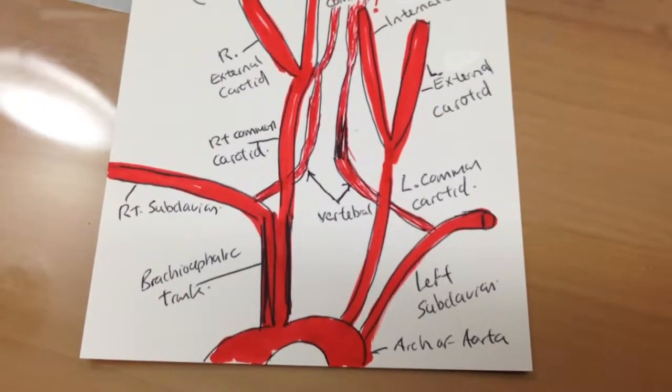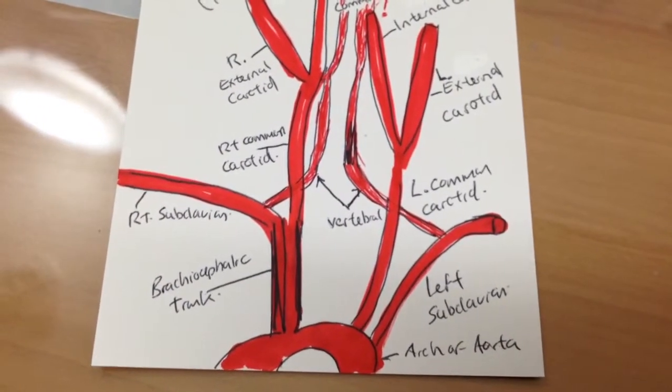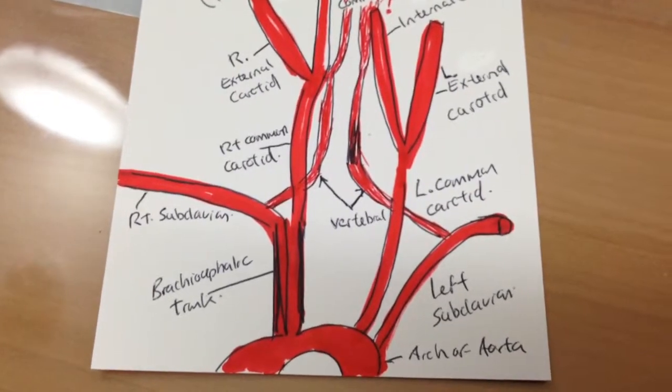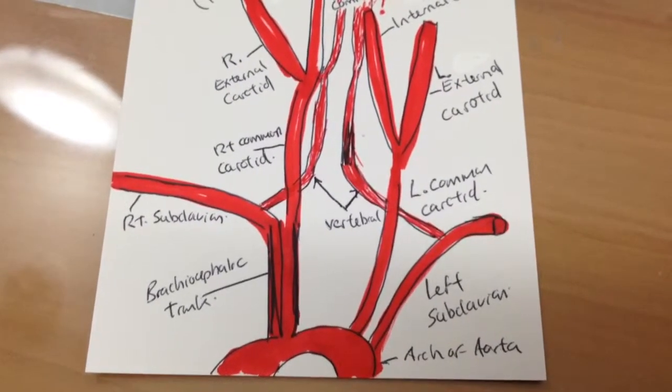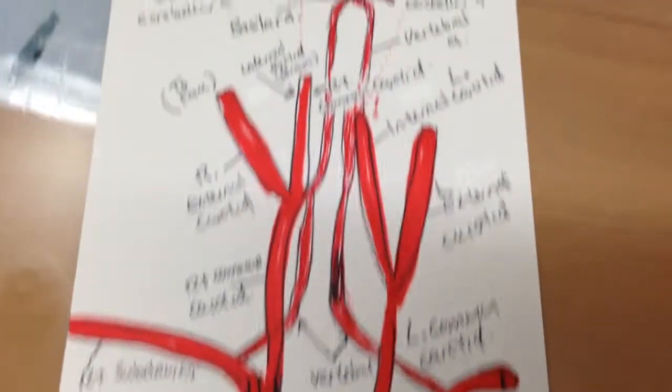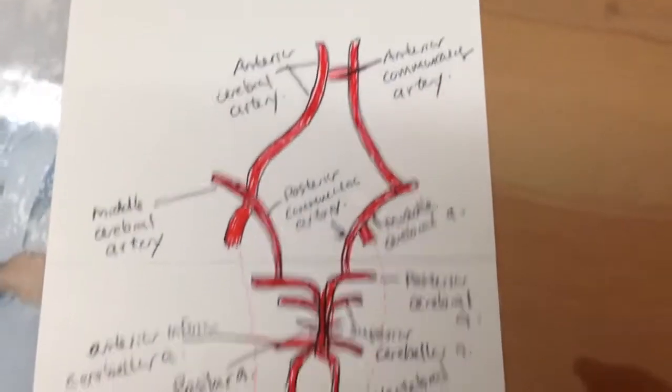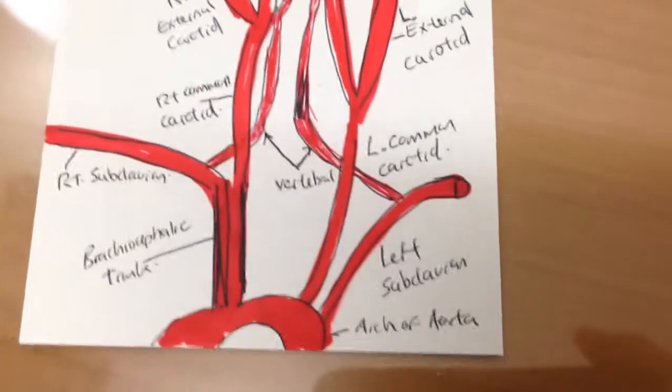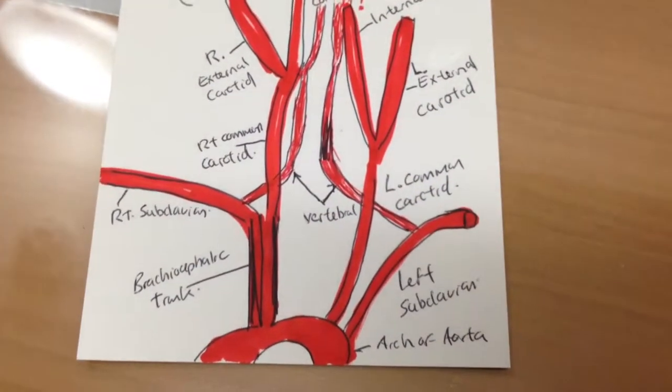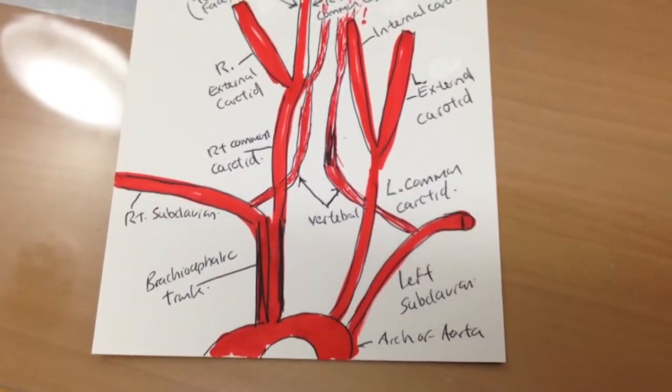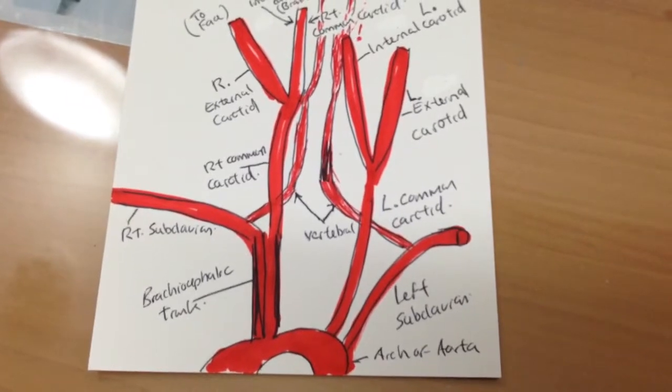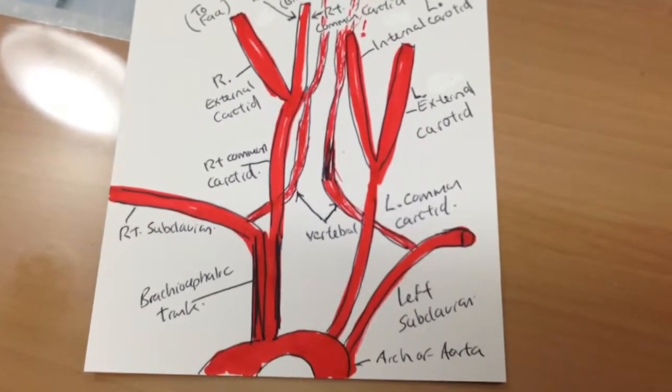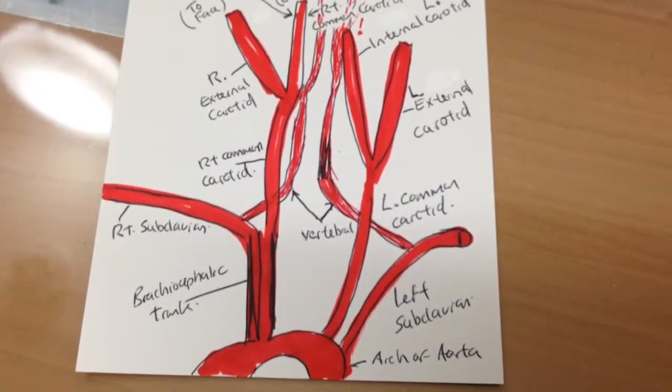Okay, let's take a look at probably the world's worst drawing of major arteries extending from the arch of the aorta all the way up until the circle of Willis. I would caution anybody looking at this video not to trust it and do not share. This is just from my own knowledge.